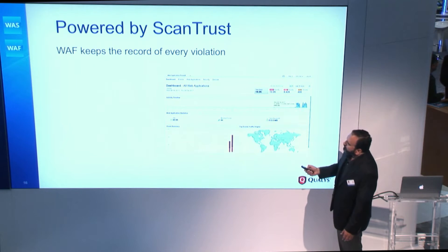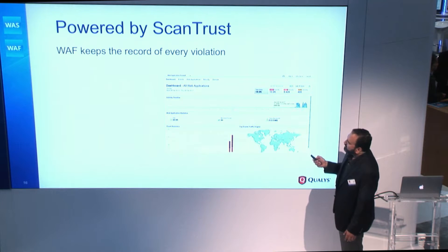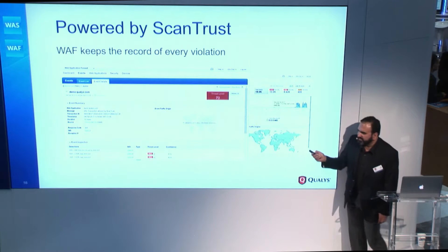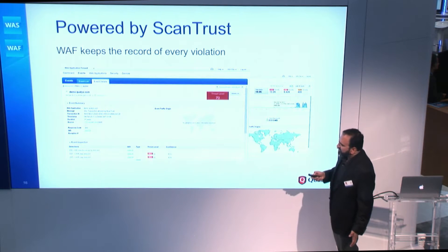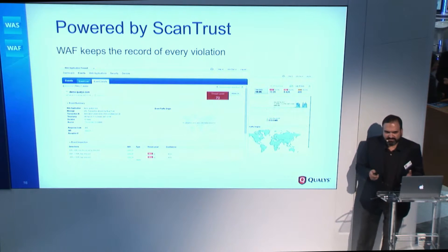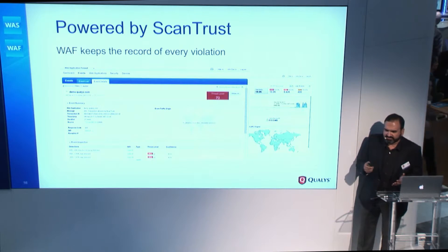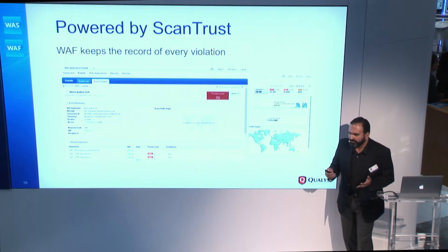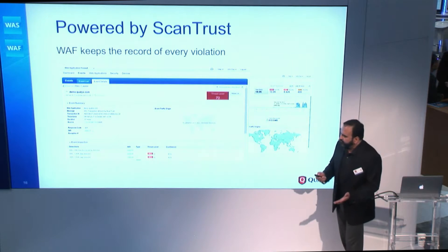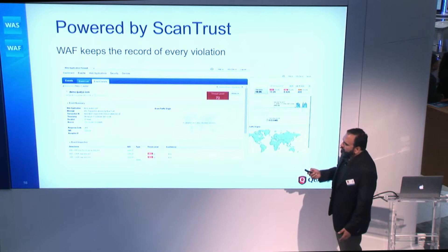In our WAF, you get a record of every specific vulnerability that WAF has detected, with details on the specific attack vector, where the request came from, and a whole bunch of additional details. There are also easy actions you can take from this screen — for example, if you determine an attack vector is a false positive and you don't care about it, you can create an exception. Any future requests that try to leverage that attack vector will be ignored by WAF, helping minimize noise and false positives.